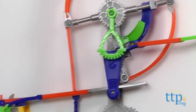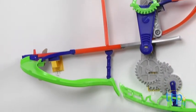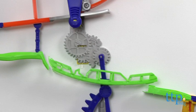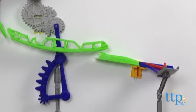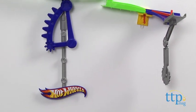This uses 3M command strips to stick the track to the wall, so you'll need about 3 feet by 4 feet of open wall space and don't put this on wallpaper or vinyl surfaces.